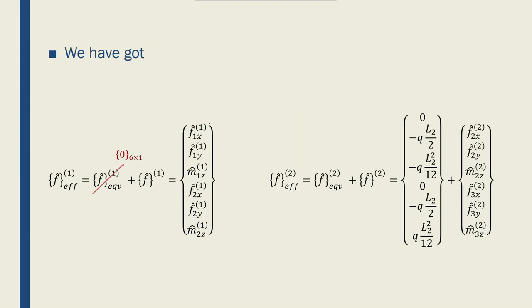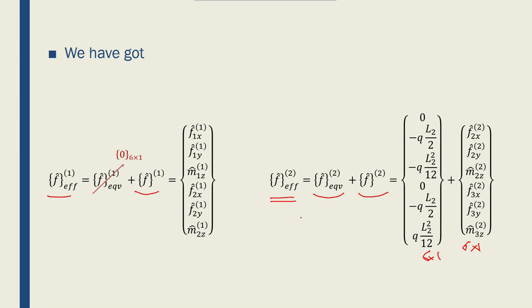We move on to find the effective nodal forces for each element in the local coordinate system. Since element 1 does not have distributed loads applied to it, its equivalent nodal forces will be a 6x1 vector of zeros. As a result, the effective nodal force will simply equal the local nodal forces. But for element 2, we have the equivalent nodal forces due to the distributed loads, plus the local nodal forces, so we add these two 6x1 vectors to form the total local effective nodal forces for element 2.